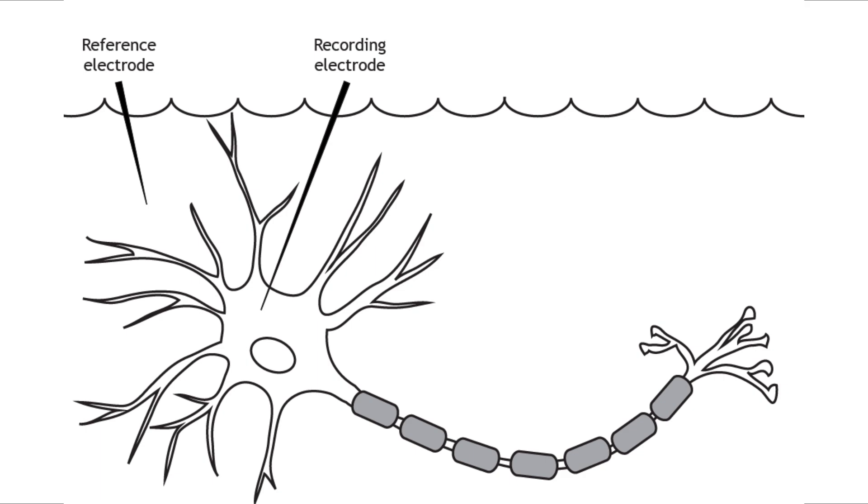And it's measured by placing a reference electrode in the extracellular solution or outside the neuron and a recording electrode inserted into the neuron's cell body or the soma. And the voltage difference between these two electrodes is the neuron's membrane potential.